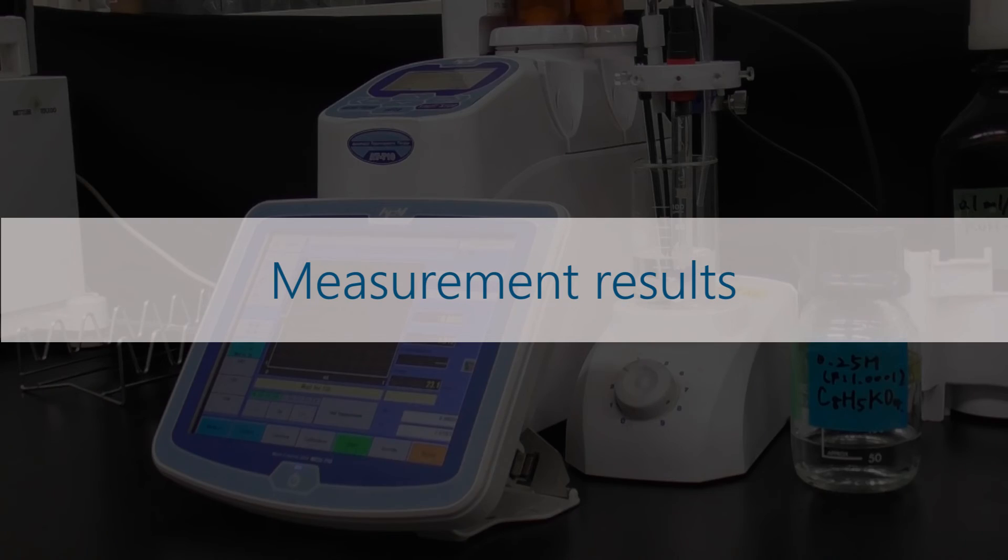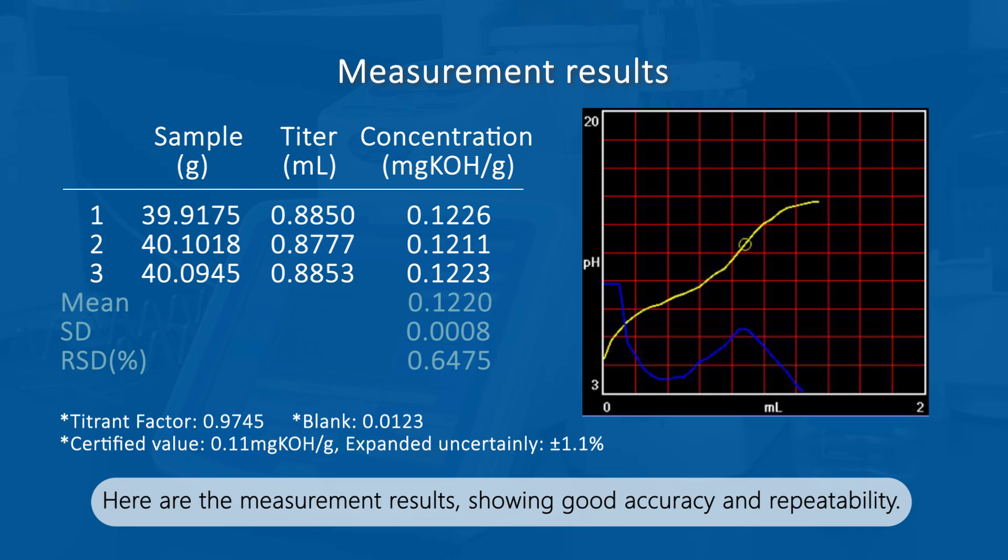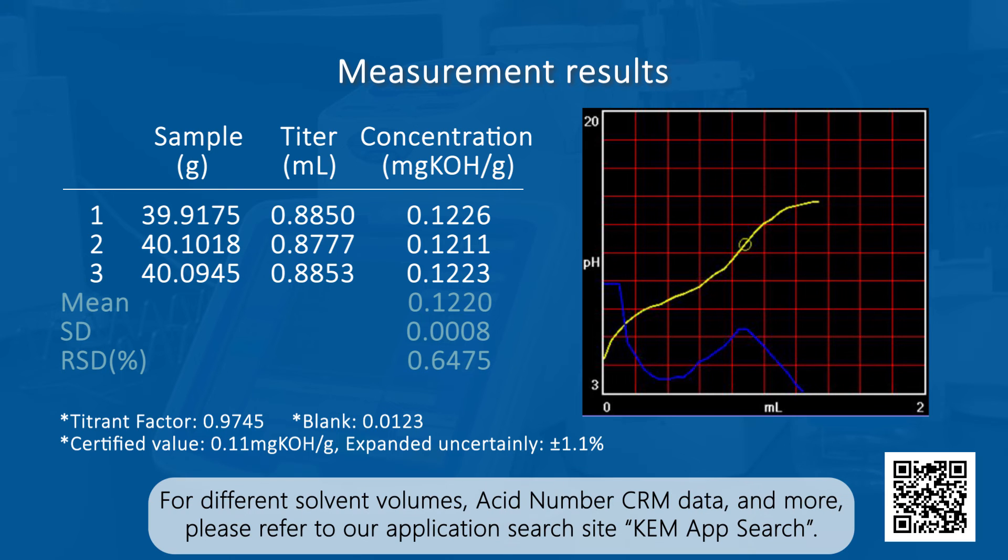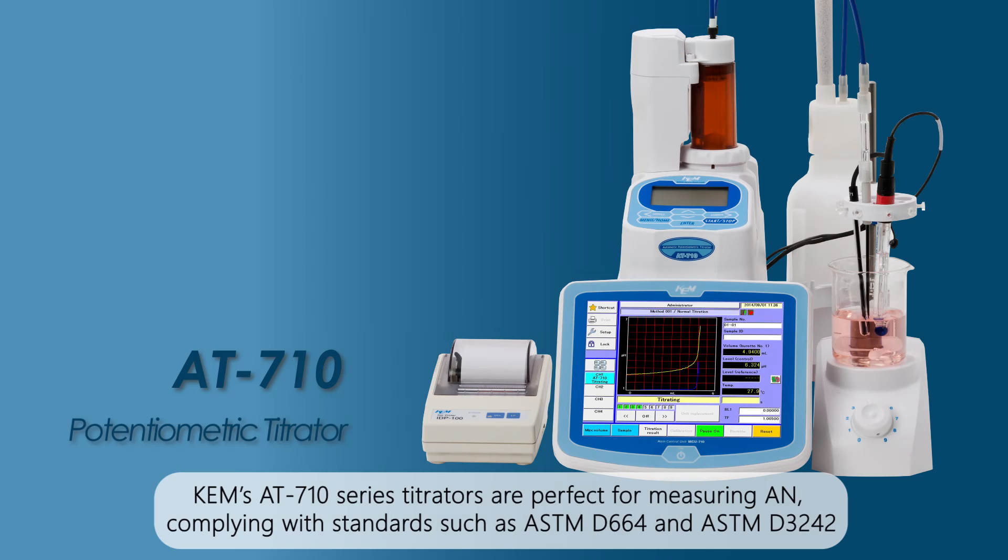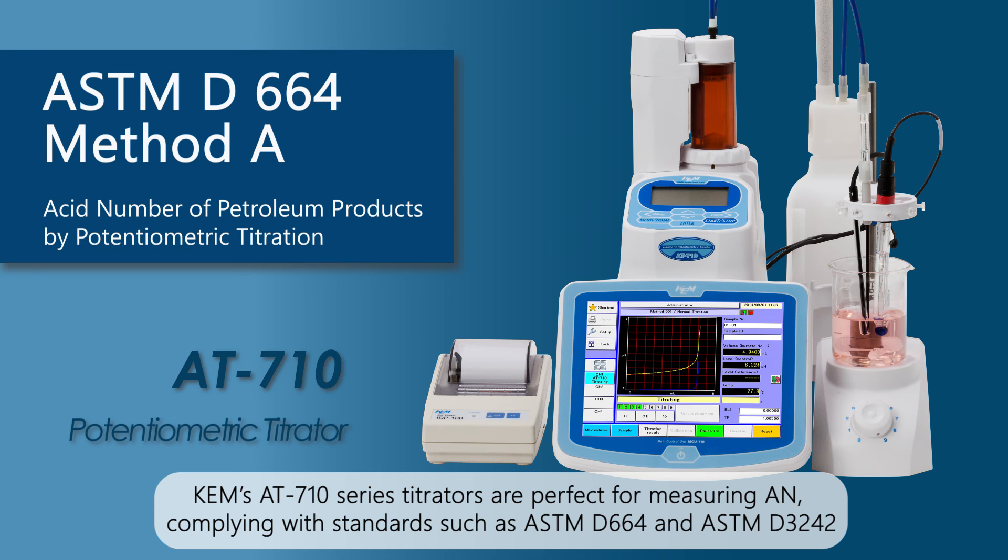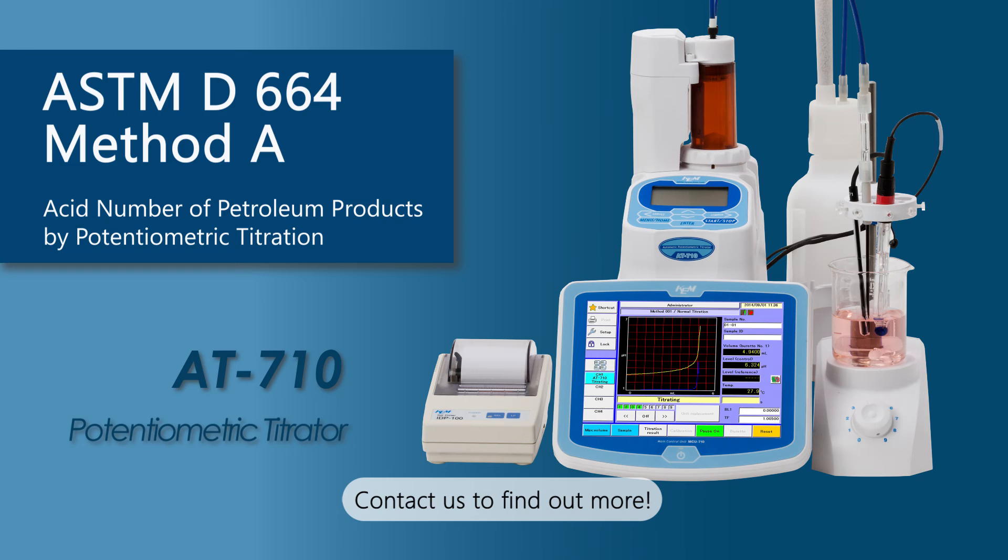Measurement results: Here are the measurement results, showing good accuracy and repeatability. For different solvent volumes, acid number CRM data and more, please refer to our application search site, KEM AppSearch. KEM's AT710 series titrators are perfect for measuring acid number, complying with standards such as ASTM D664 and ASTM D3242. Contact us to find out more.